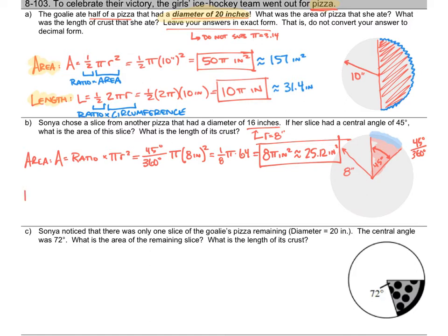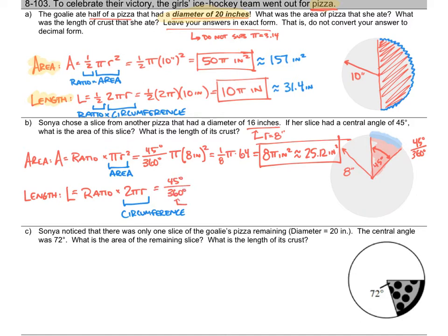Now let's use the same approach for the length of crust. It's going to be a ratio times 2πR — the circumference. I still have 45 degrees out of 360 degrees, which is one-eighth. So that's one-eighth times 2 times π times the radius of 8 inches. One-eighth times 8 is just 1, and I'm left with 2π. So the crust length is 2π inches, and 2 times 3.14 gives about 6.28 inches.